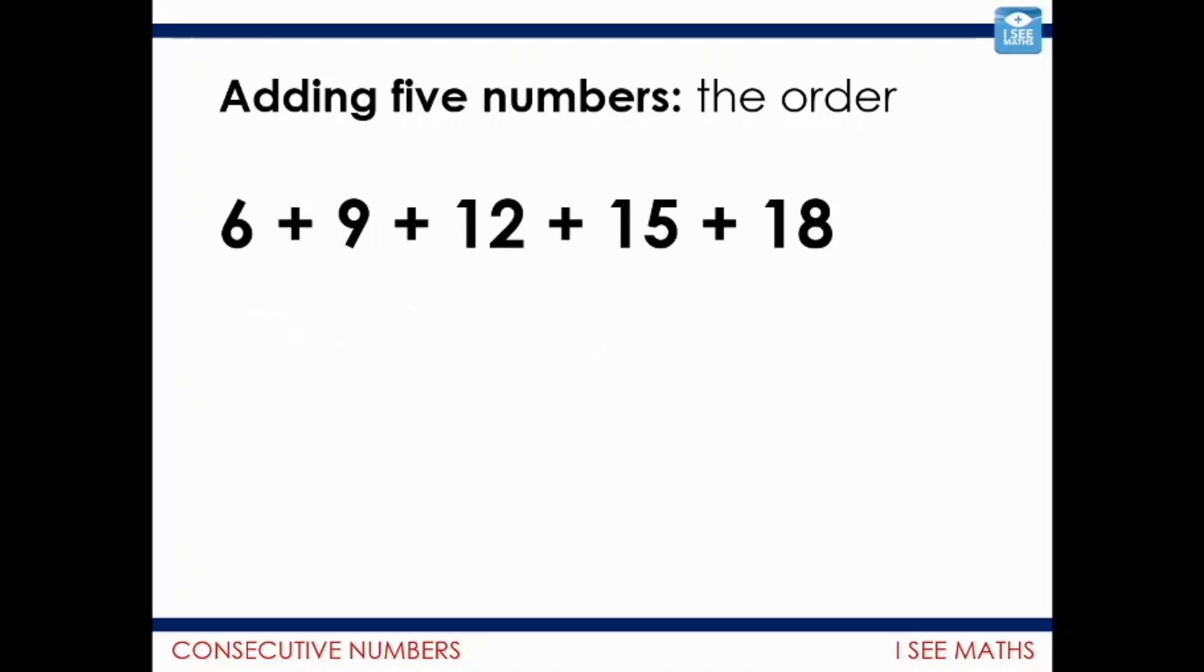Equally, I could try it this way around. Let's say I go for 18 plus 6. That's 24. I can see there's another 24 in there. 15 and 9 is 24. And that just leaves the 12. Two 24s is 48. And the 12, well, of course, still 60.